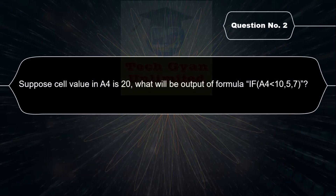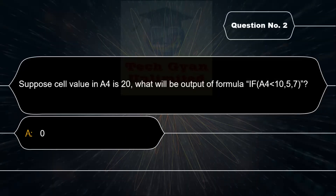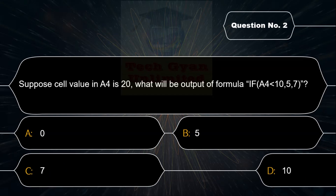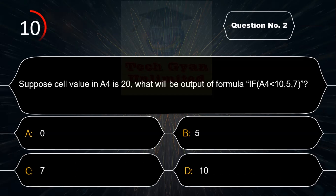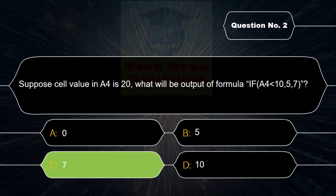Suppose the cell value in F0 is 20. What will be the output of the formula IF(F0<10, 5, 7)? Option A: 0, Option B: 5, Option C: 7, Option D: 10. The correct answer is Option C: 7.